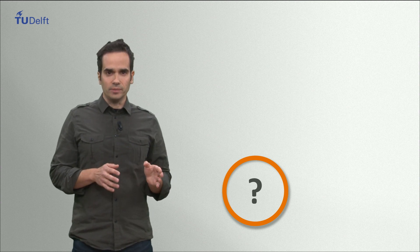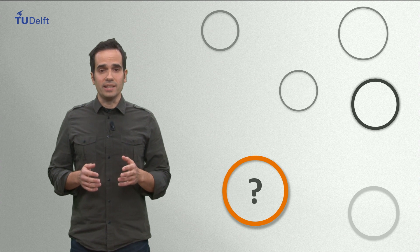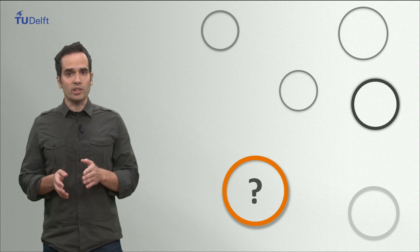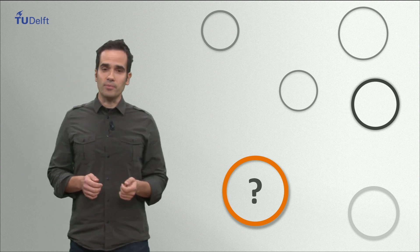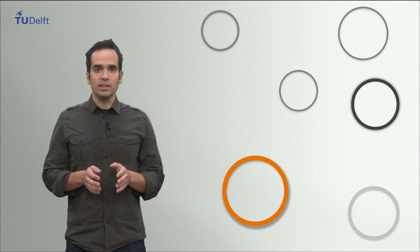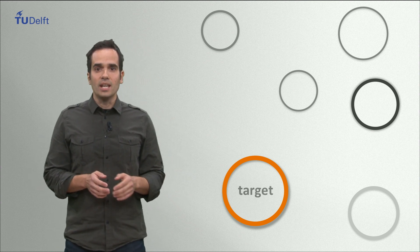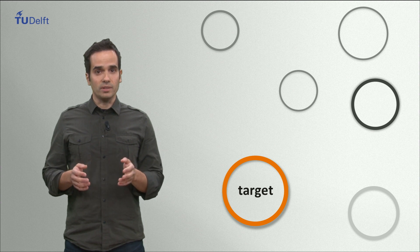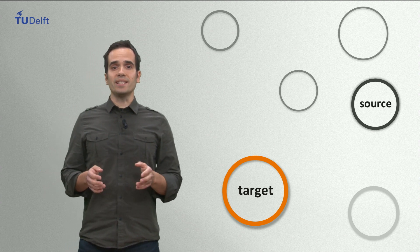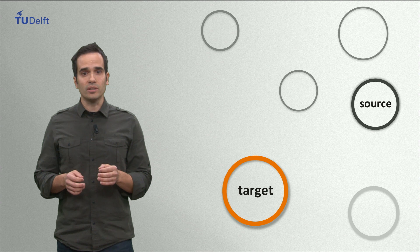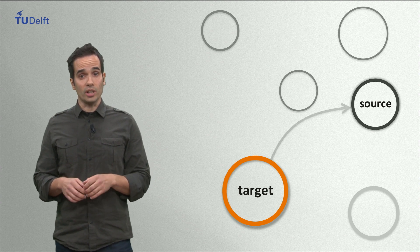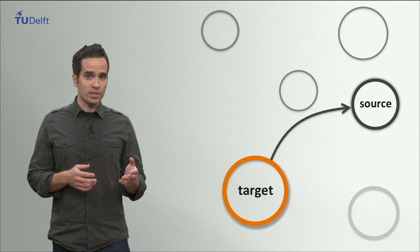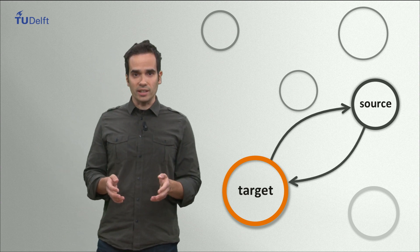There are two important things to consider when trying to discover analogies. One is the challenge you are trying to tackle. The other is the place, the things from where an inspiration to address your challenge will come from. The challenge to be tackled is the target. The origin of your inspiration is the source. So basically, you want to find inspiration for your ideas by searching for a useful source or sources that somehow share some resemblance with your target.